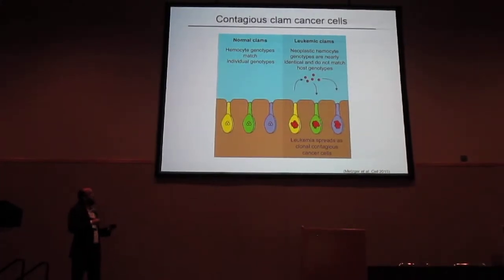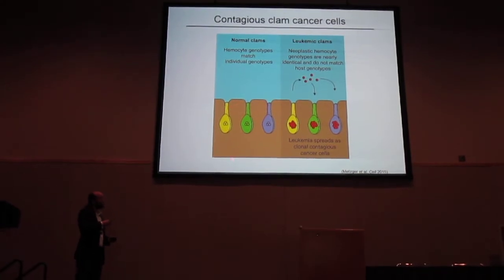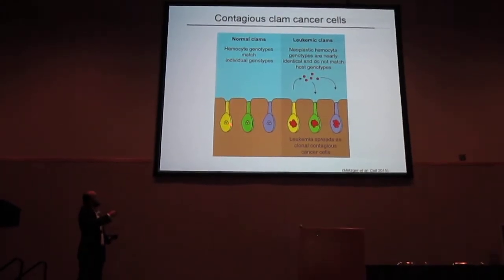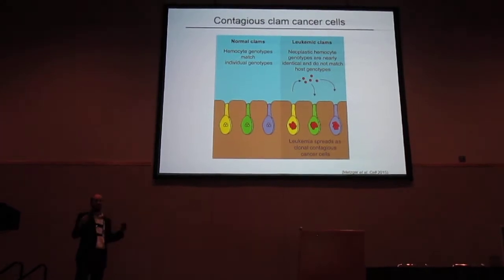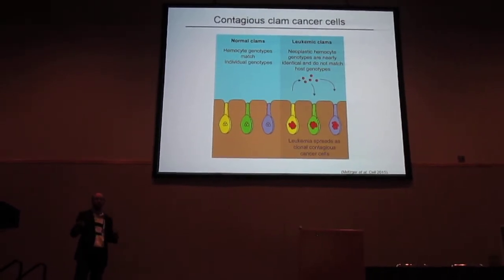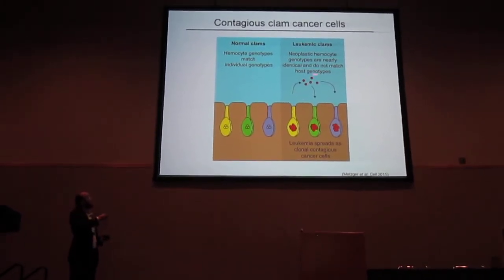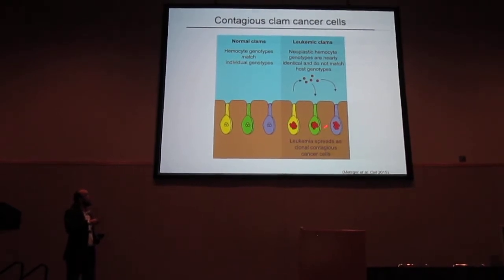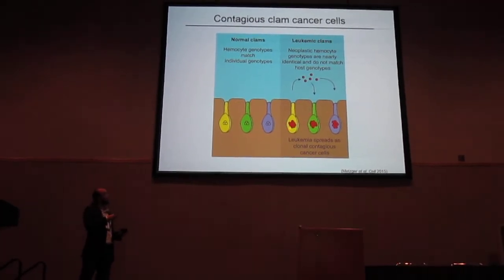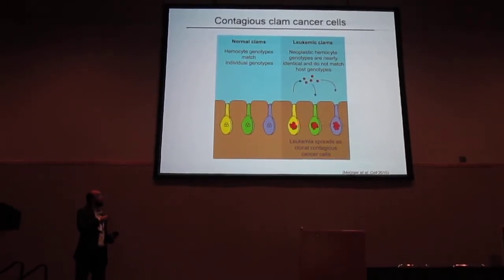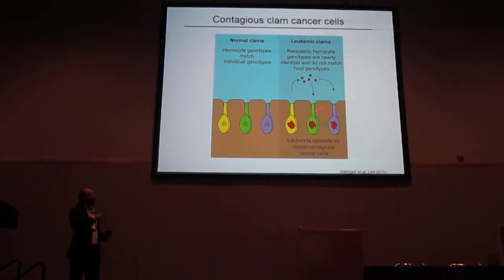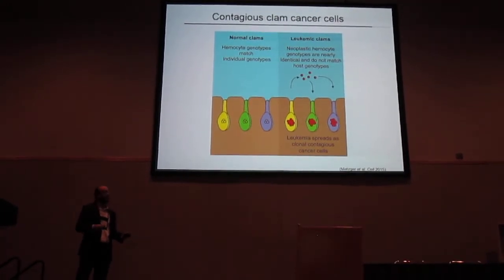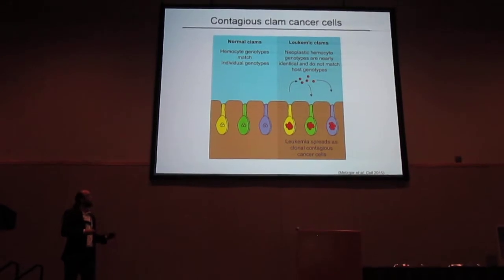Our model for this is that in normal individuals, we just have normal clams sitting underneath the sand — they are sessile organisms and don't touch each other. But in these neoplastic individuals, the neoplastic cells actually spread through the water from one individual to the next, spreading this clonal cancer through the population.